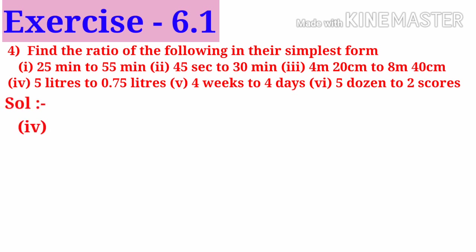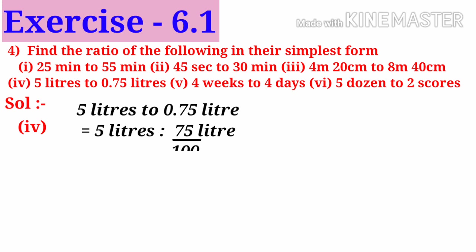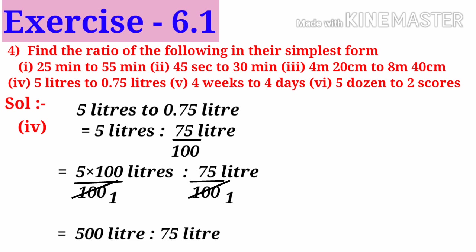Number 4: 5 liters to 0.75 liters. That is 5 liters to 75/100 liters. To make like ratios, multiply and divide by 100 to the antecedent. That is 5 into 100 divided by 100 liters to 75/100 liters. Now 500 liters to 75 liters. On simplification by 25, we get 20 to 3. The ratio is 20 is to 3.